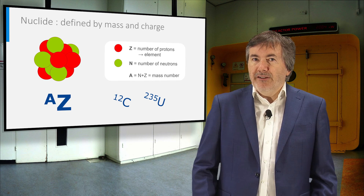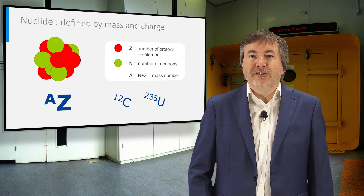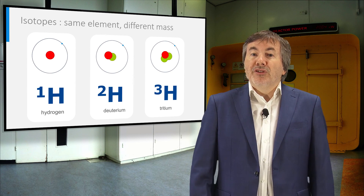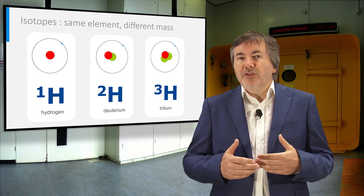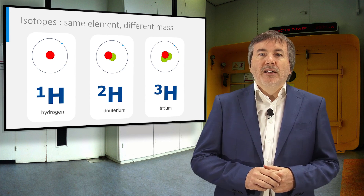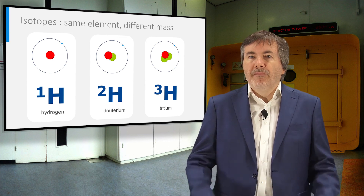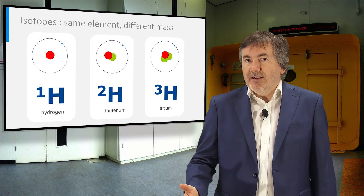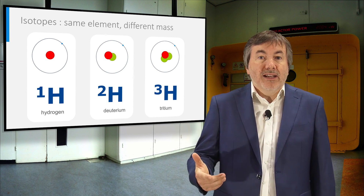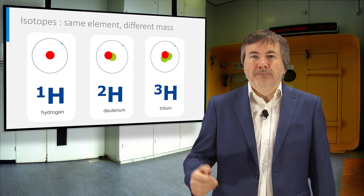Uranium-235 is a heavy nuclide with 90 protons and 145 neutrons. For the same element, one can have atoms with a different number of neutrons — we call them isotopes. They have a different mass, but chemically behave the same. For example, the lightest element, hydrogen, has isotopes with one or two extra neutrons. They are called deuterium and tritium.